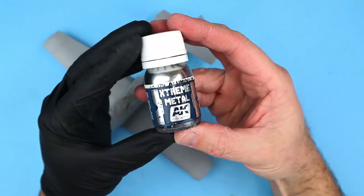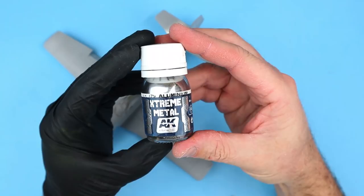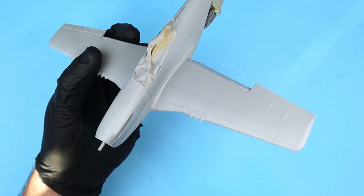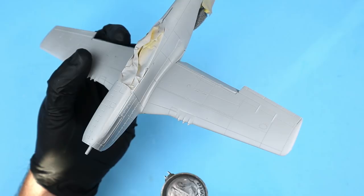Now I was ready to start laying down some paint. For the natural metal finishes I find AK's extreme metal range to be really user friendly and durable. It's a lacquer based acrylic and you don't have to apply a black gloss coat under it unless you're wanting a highly polished chrome look.